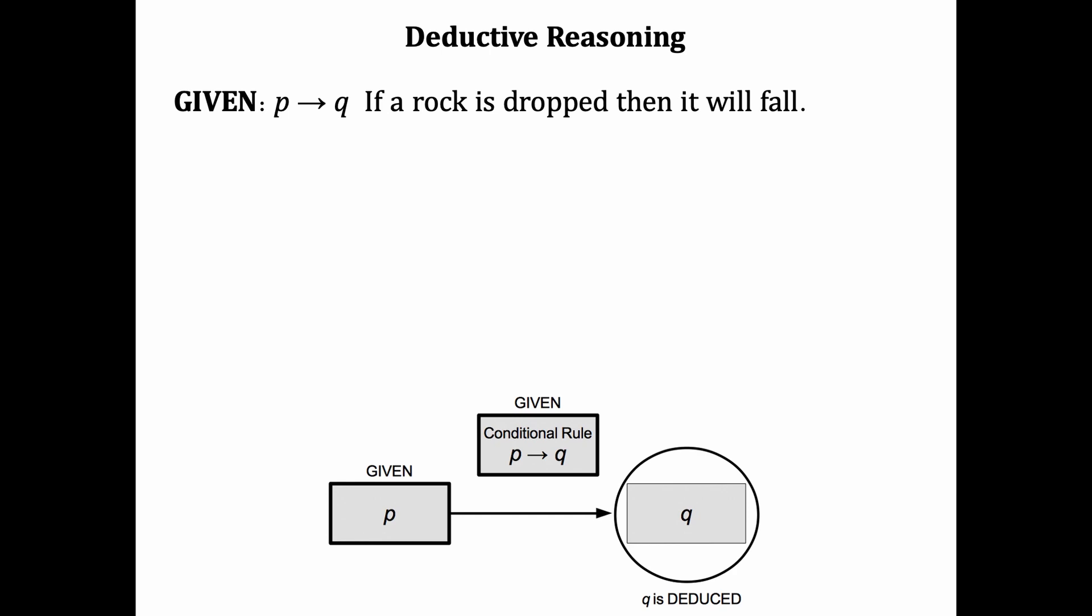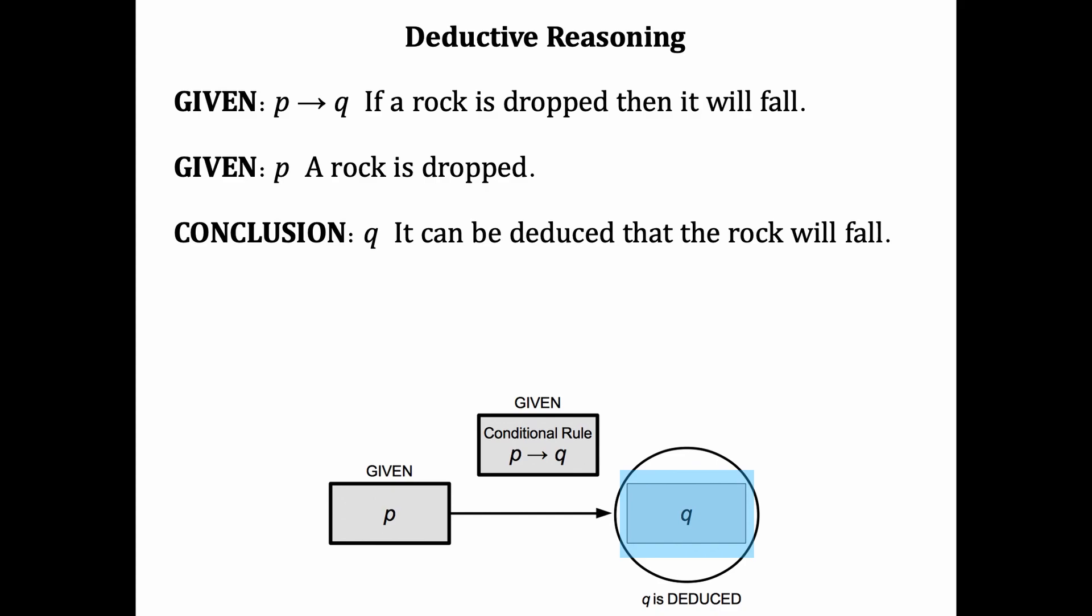Here's that rock example one more time. We may assume that if a rock is dropped then it'll fall based on our experience from the past. Also assume that I'm about to release a rock. Can you deduce what will happen? You can deduce that the rock will fall. But keep in mind that the conclusion is only true if the premises were.